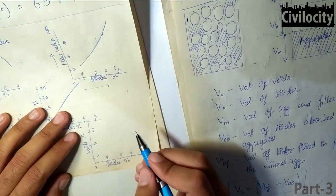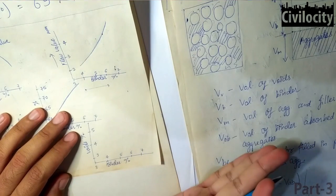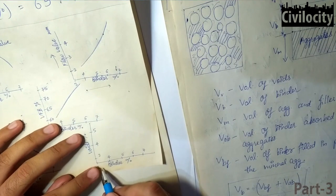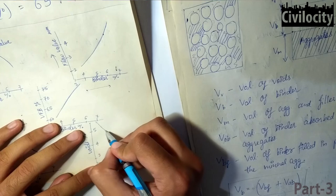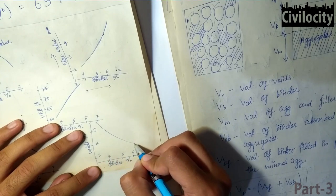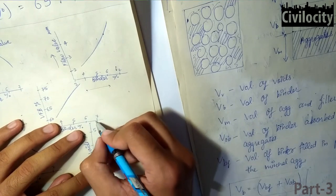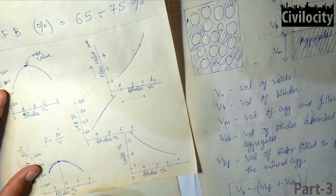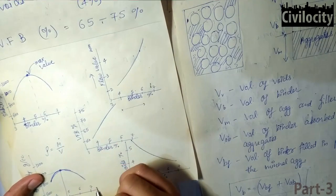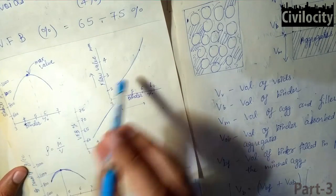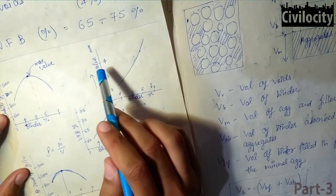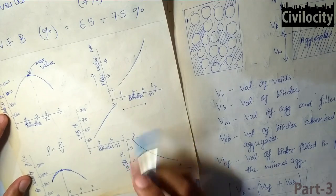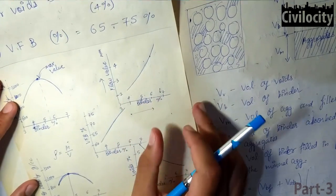Our last graph is voids percentage versus binder content. If we increase the binder content, the void percentage decreases. It's a simple graph — when no binder is added, voids are at maximum; as binder increases, voids reduce to a minimum. These five graphs — stability, flow value, voids filled with bitumen, density, and void percentage — are very important graphs in Marshall mix design.